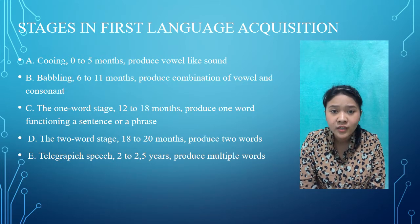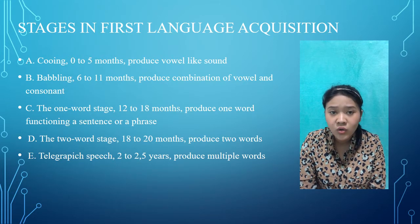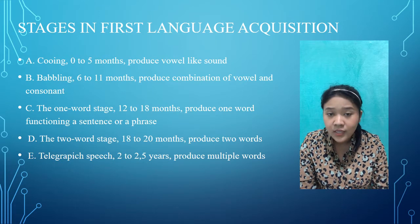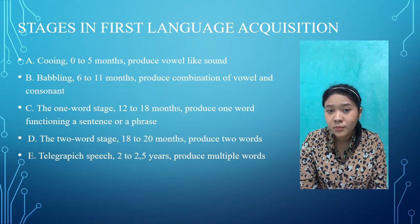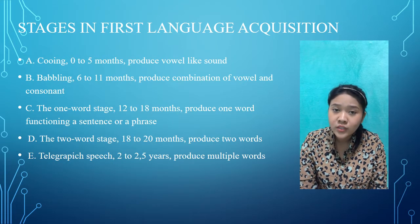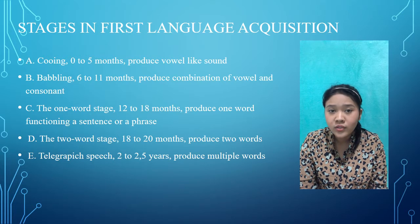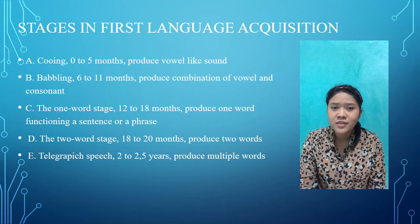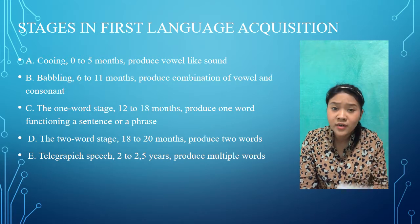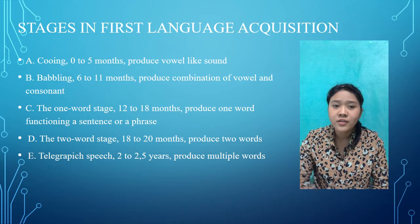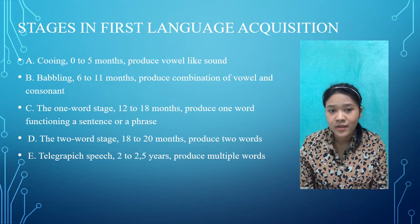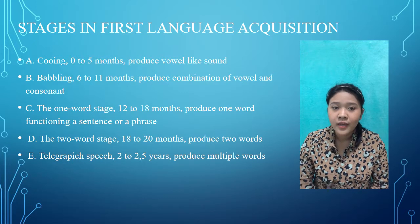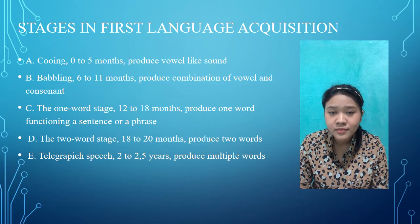The third is the one-word stage, or holophrastic stage, around 12 to 18 months old. Children produce one word functioning as a sentence or phrase. Single-unit utterances are produced such as 'milk', 'cookie', 'docket', which can be interpreted as full sentences like 'I want to drink milk' or 'there is a cookie'.